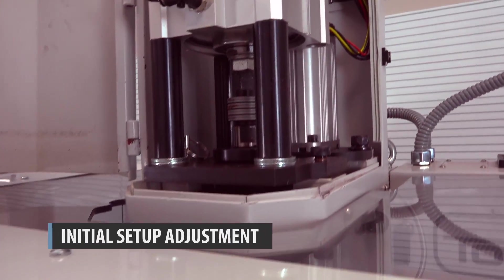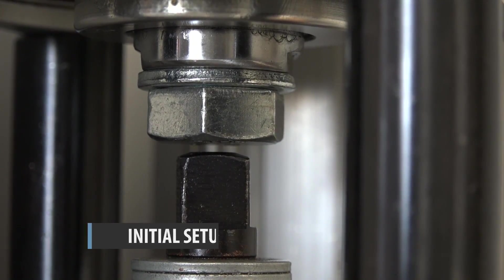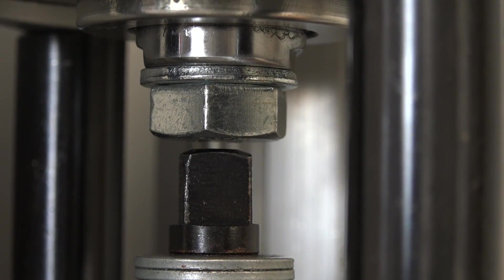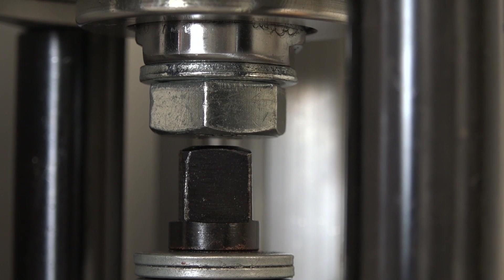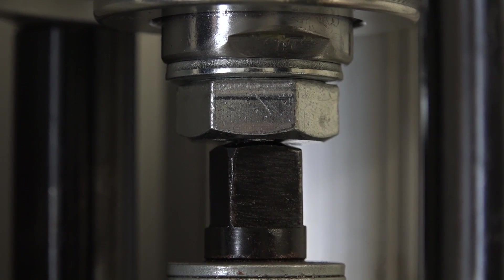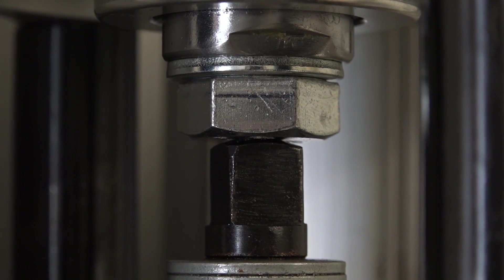If the gap between the hex head screw on the power drawbar cylinder rod and the top of the drawbar is between 1/16th of an inch and 1/8th of an inch, you've successfully installed your power drawbar on your PCNC 440. If the gap is under 1/16th of an inch, or there is no gap, then you need to make an adjustment.